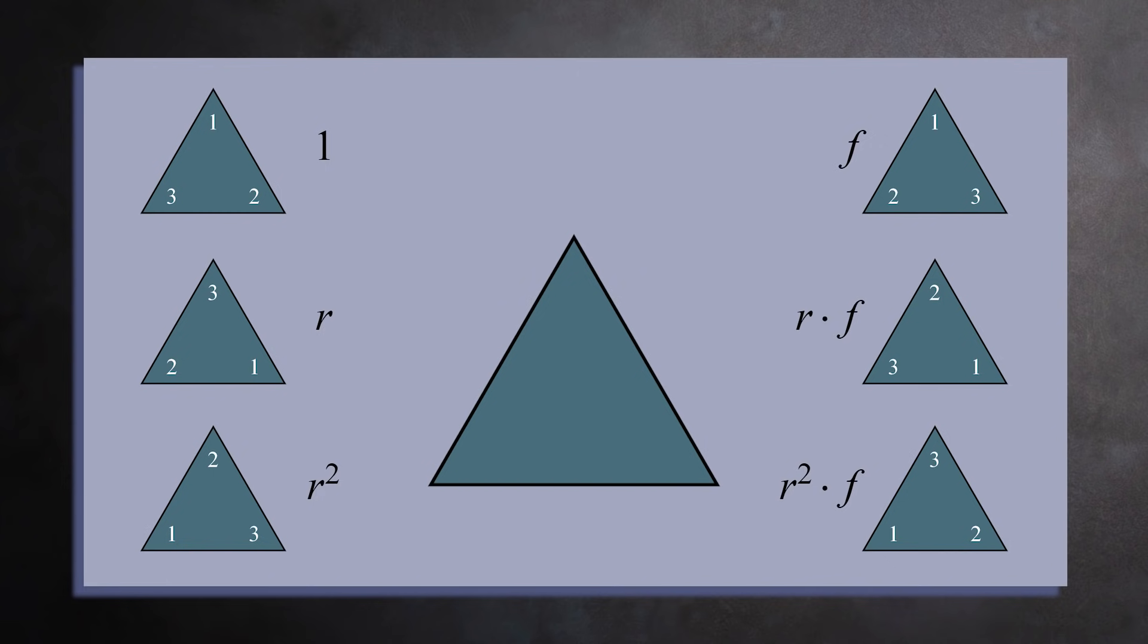Notice you can multiply any two transformations by first applying one, then the other. In particular, if you multiply any transformation by one, you get the same transformation. This is because one doesn't actually change the triangle.